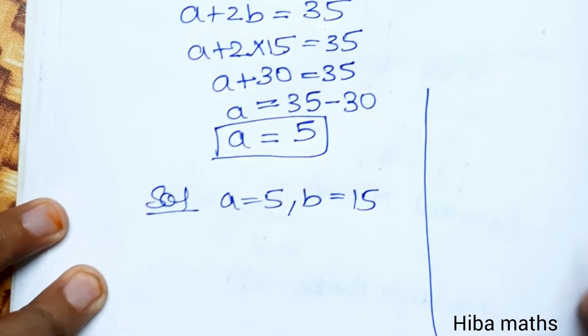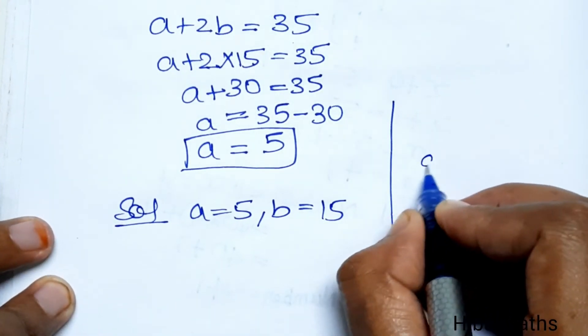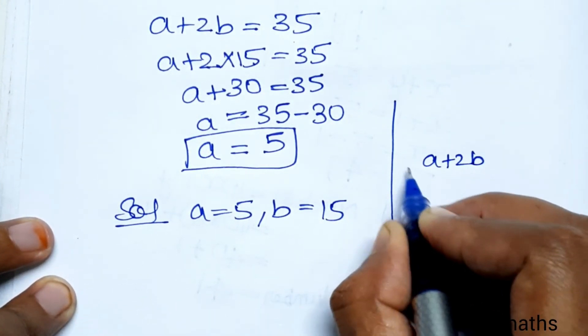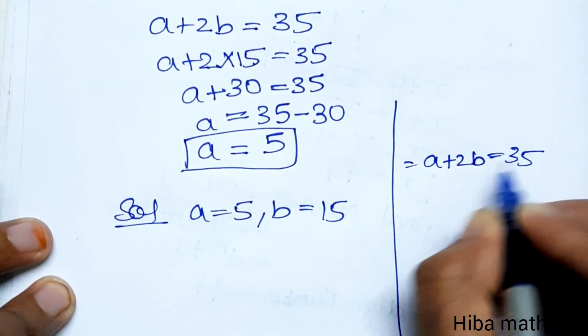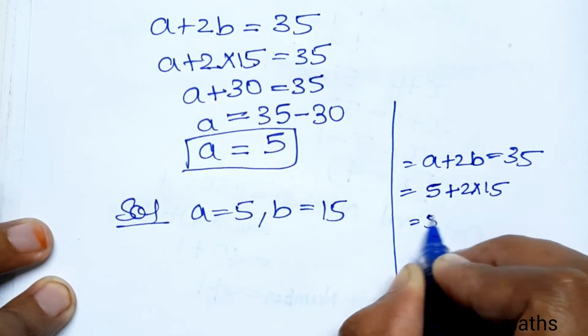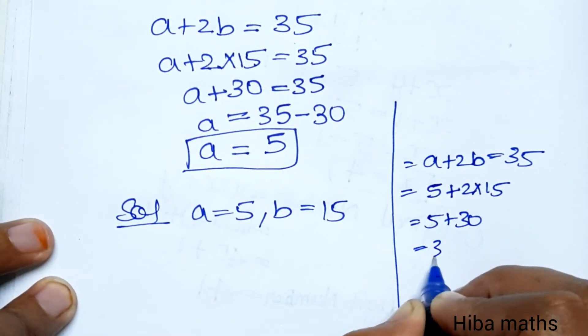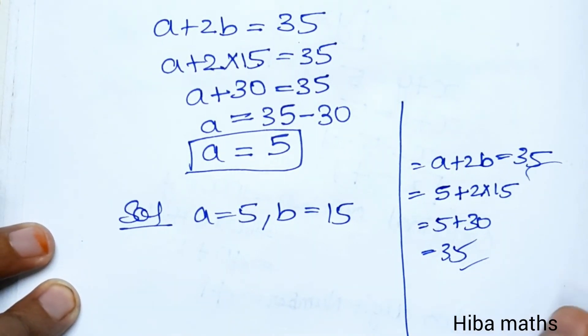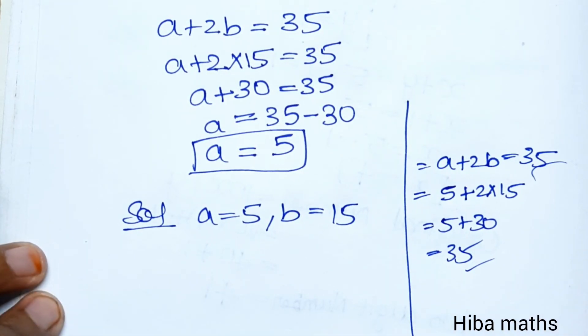Verification: 5 plus 2 times 15 equals 5 plus 30, which equals 35. Correct! The answer is correct. Thank you so much for watching.